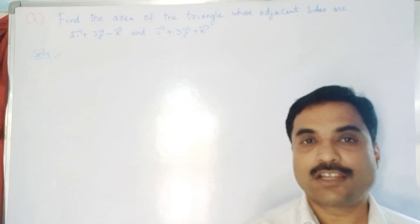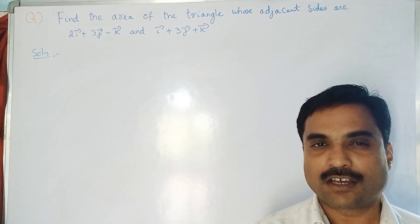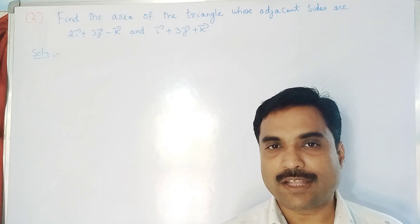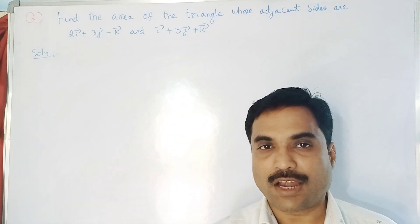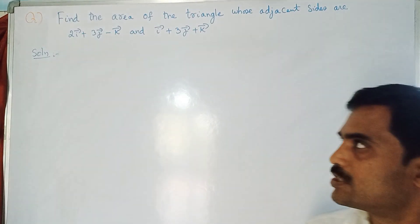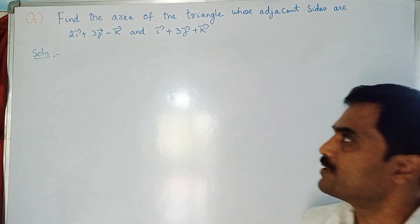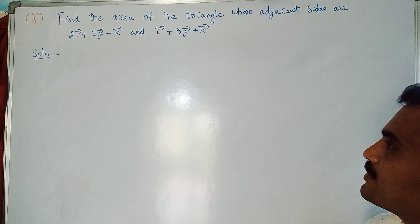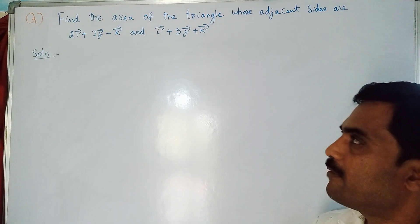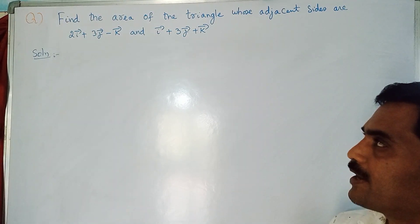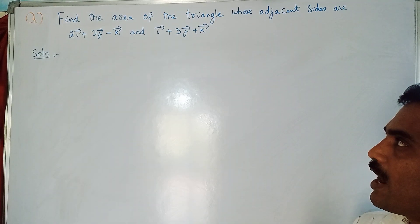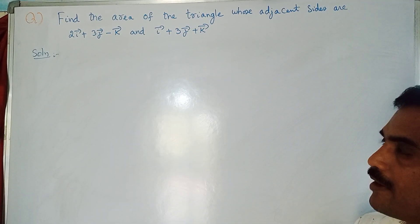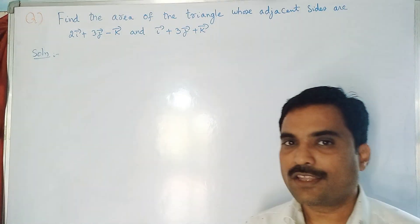Hi, welcome to my channel. I'm Saksha Silla. In this new video I'm going to solve a mathematical problem under vector product. The problem is: find the area of the triangle whose adjacent sides are 2i + 3j - k and i + 3j + k.